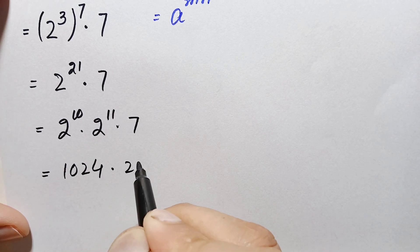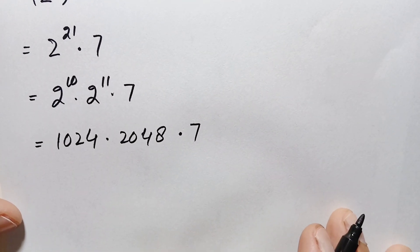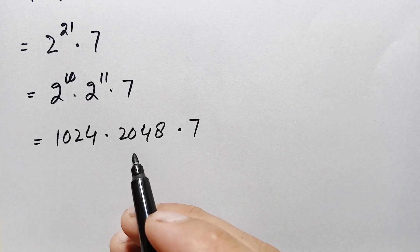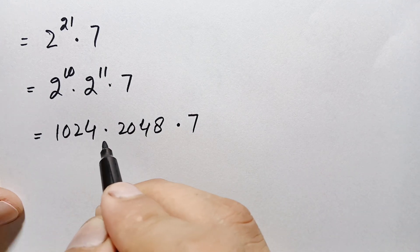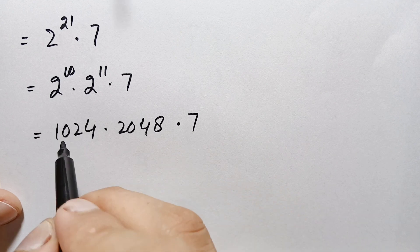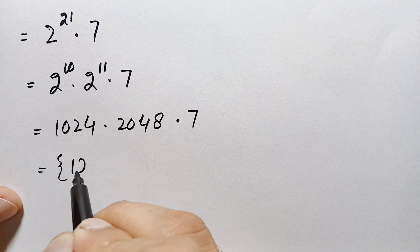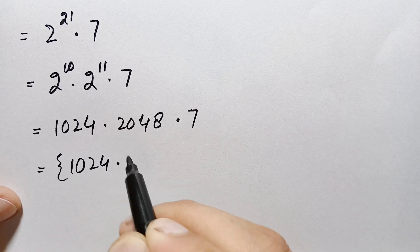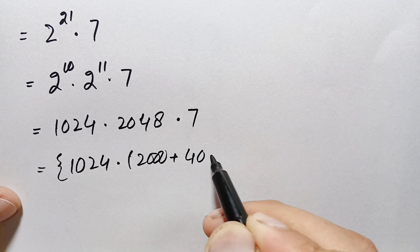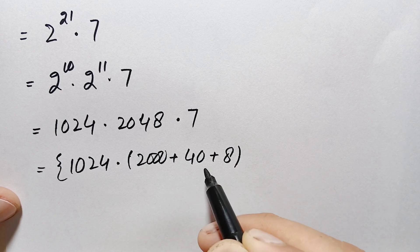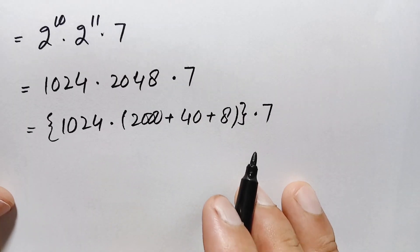The value of 2 raised to power 11 is 1024 times 2, which gives us 2048. So we have 1024 times 2048 times 7. We need to multiply these three numbers without a calculator. First we multiply 1024 times 2048, then multiply the result by 7. We can write 2048 as the sum of 2000 plus 40 plus 8.